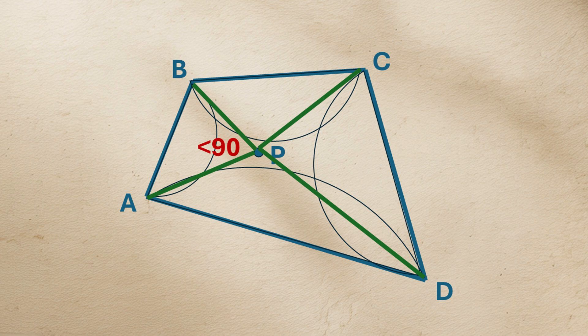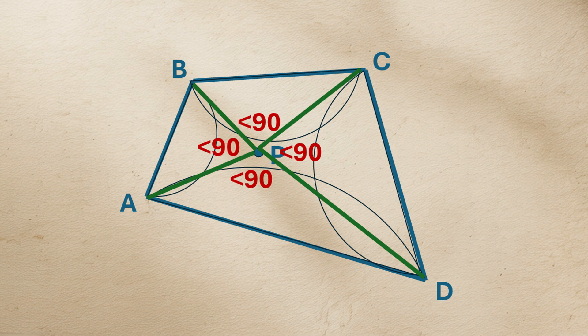Therefore, since P is outside all four circles, we have angle APB less than 90 degrees, angle BPC less than 90 degrees, angle CPD less than 90 degrees, and angle DPA less than 90 degrees.